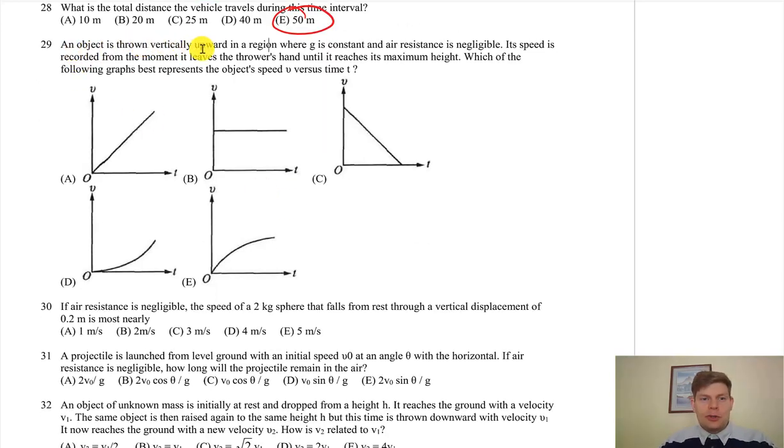Alright, an object's thrown vertically upward to a region where the acceleration of gravity is constant. Air resistance is negligible, and speed is recorded from the moment it leaves the thrower's hand until it reaches the maximum height. We just want a speed versus time graph. You want something with a slope down. If you were to measure the slope, it should be 9.8 down.